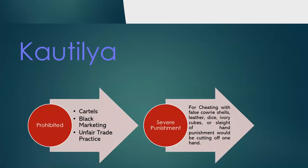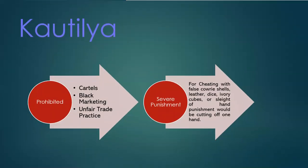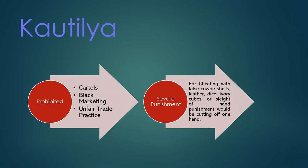Kautilya prohibited cartels, black marketing, and unfair trade practices in the Arthashastra. The severest punishments were for cheating with false kauri shells — kauri shells, leather dice, and ivory cubes were used as currency in those ancient times. The punishment for cheating with false currency could be as severe as cutting off one hand.